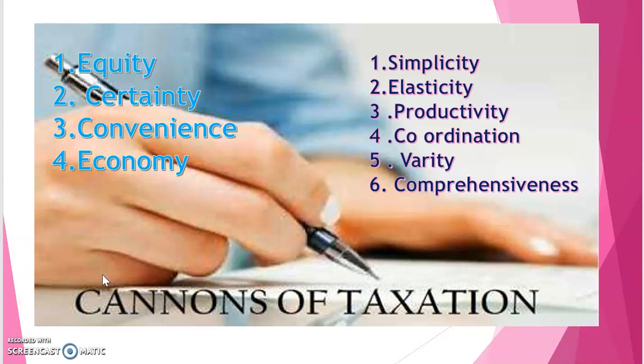Regarding the canon of convenience, taxes should be levied and collected in a manner that provides the greatest convenience not only to the taxpayer but also to the government. It should be painless and trouble-free as far as practicable. Every tax ought to be collected at the time or in the manner in which it is most likely to be convenient for the contributor to pay it. These are the four important canons discussed here.